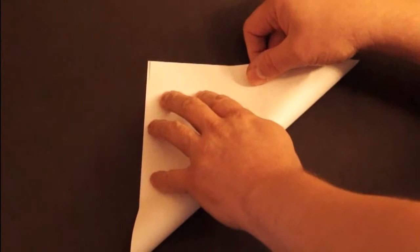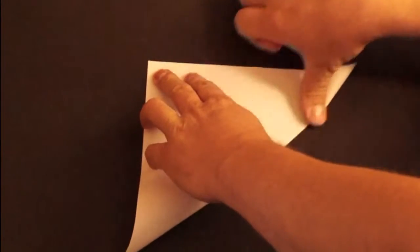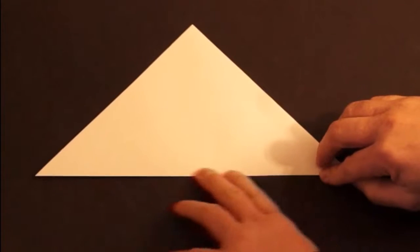First we start with a square. Fold one corner to the other corner to make a triangle. Line up the corners so the edges line up as best you can. Press down good on your fold.